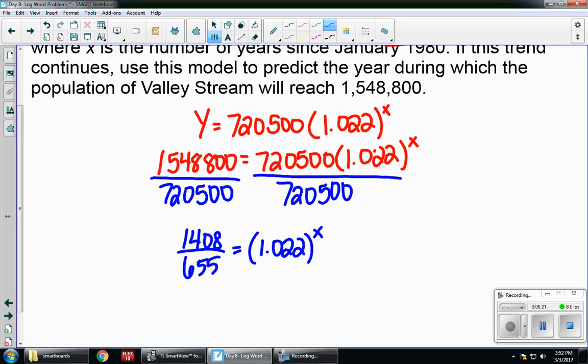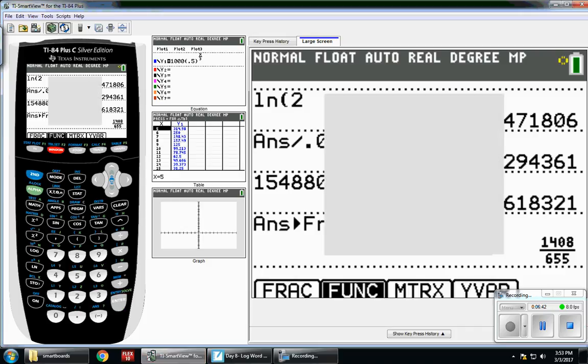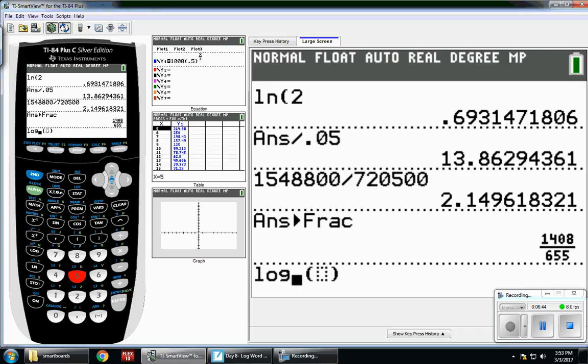Now, my base is isolated, so I'm going to keep the base and switch. So log, my base is 1.022, and I'm putting in that fraction. So now I can go to my calculator to use alpha window. Alpha window, choice 5. My base is 1.022.